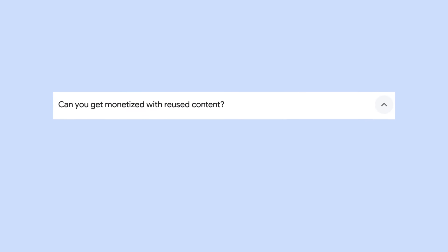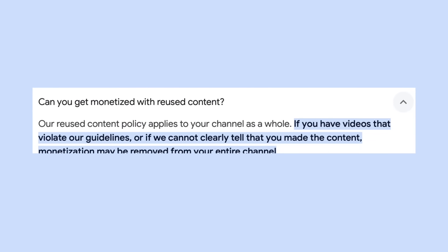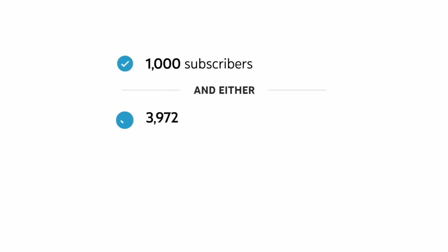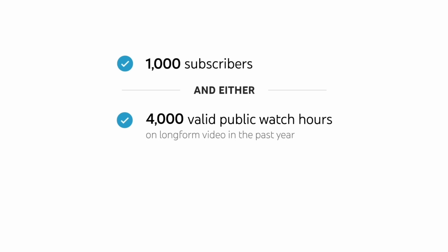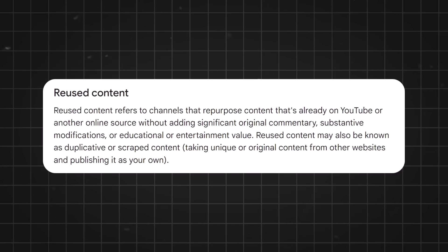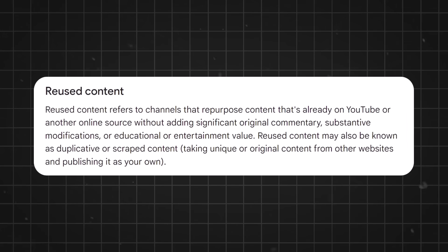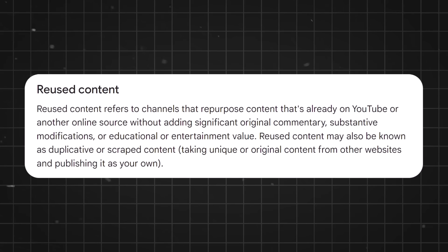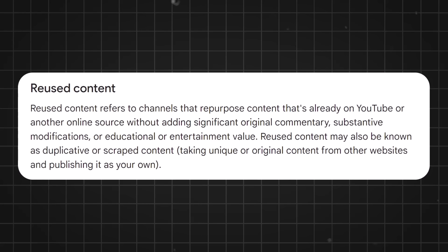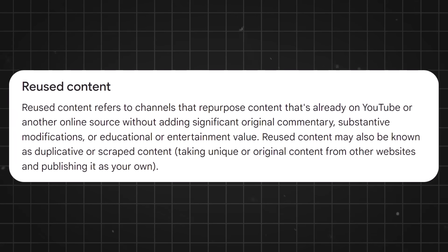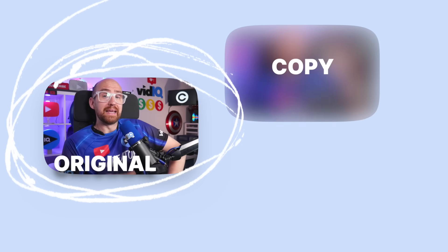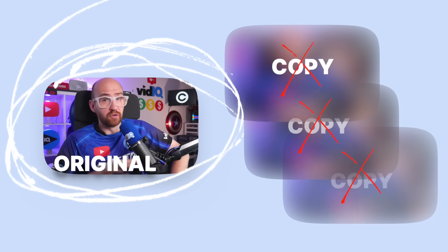So we've covered what a copyright claim is and how you can remove it or dispute it. Let's do a sidestep into a challenge that affects a lot of channels when they apply for monetization: reused content. This can be a devastating blow, especially when a creator has spent months or years growing their channel only to be told they can't make money from it. YouTube defines reused content as content that is not clearly your own original creation — it may already be on YouTube or another online source and have no added significant original commentary, substantive modifications, or educational or entertainment value.